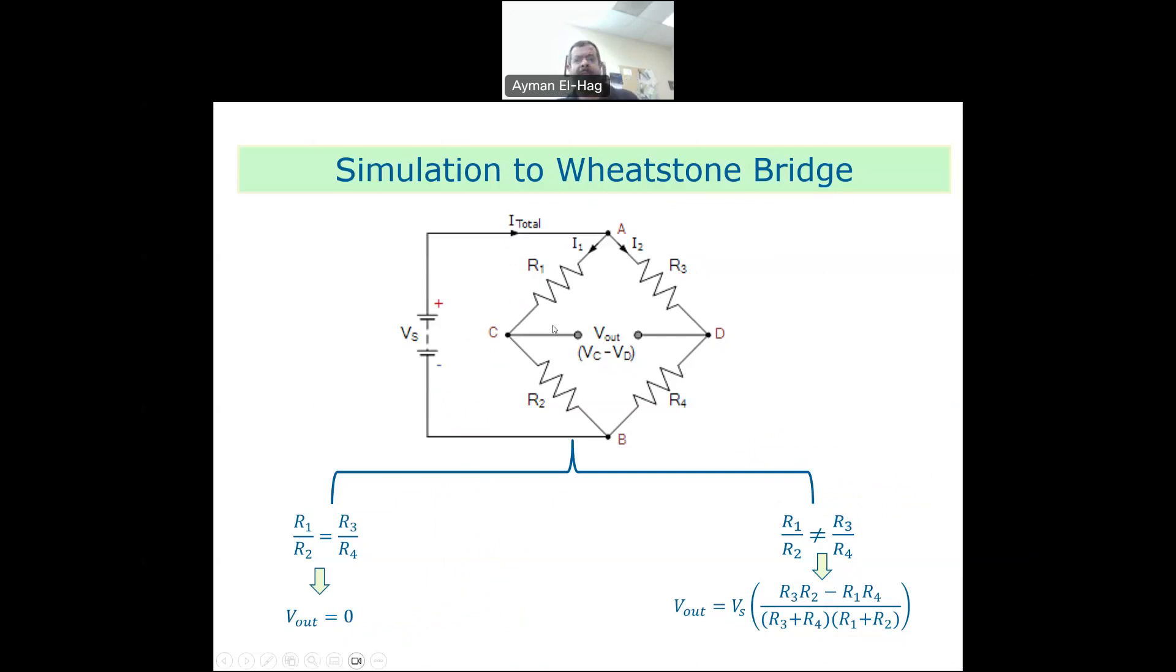let's just summarize what I will try to simulate. So this is the Wheatstone Bridge. Basically, you have a voltage supply, and you have two legs. The first one consists of R1 in series with R2. The second one is R3 in series with R4. So this is the first leg and this is the second leg.